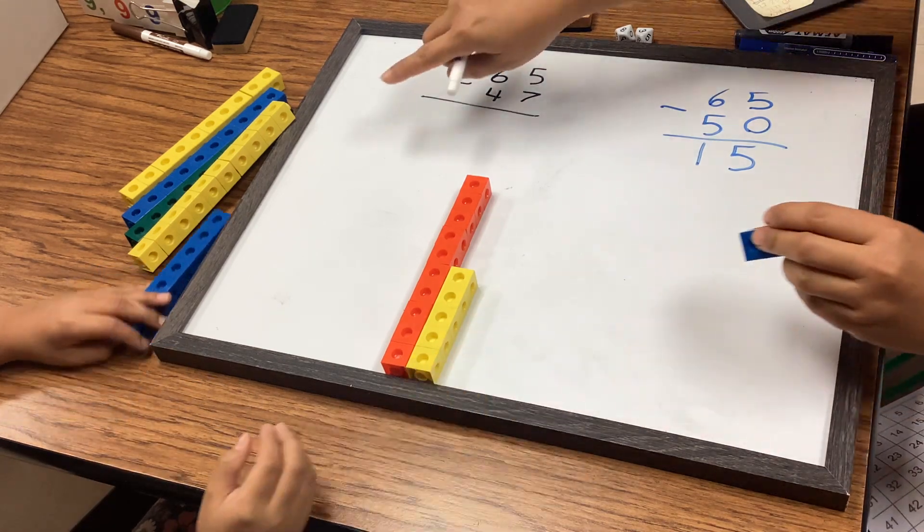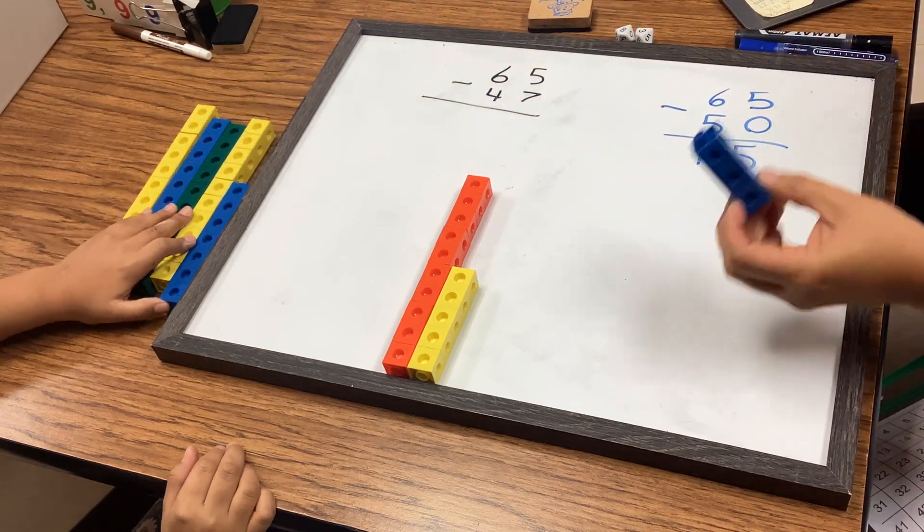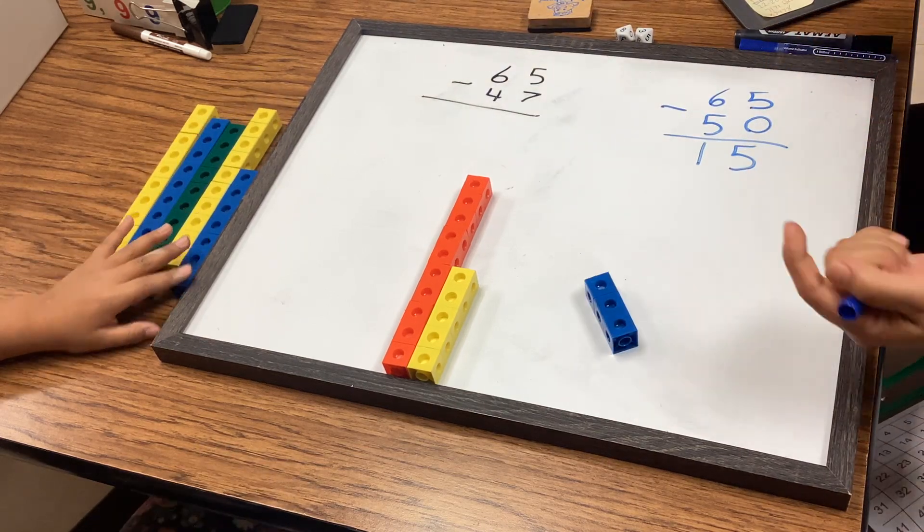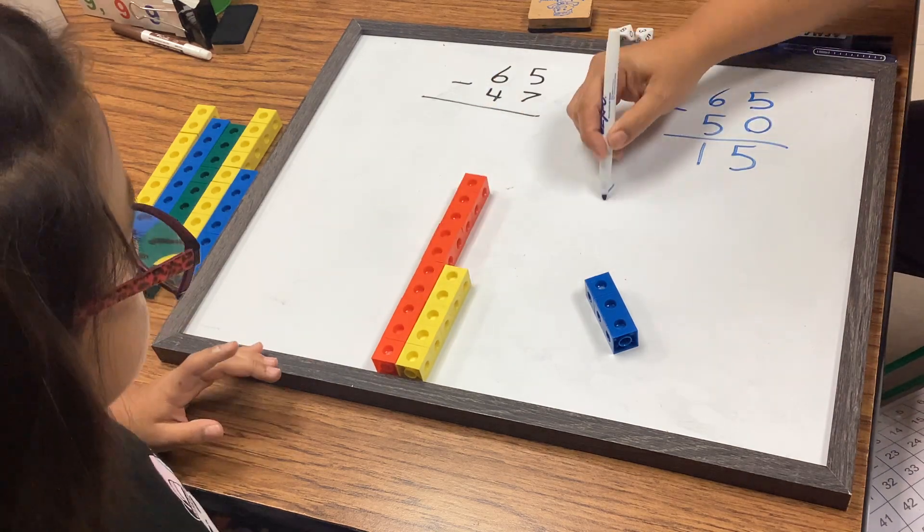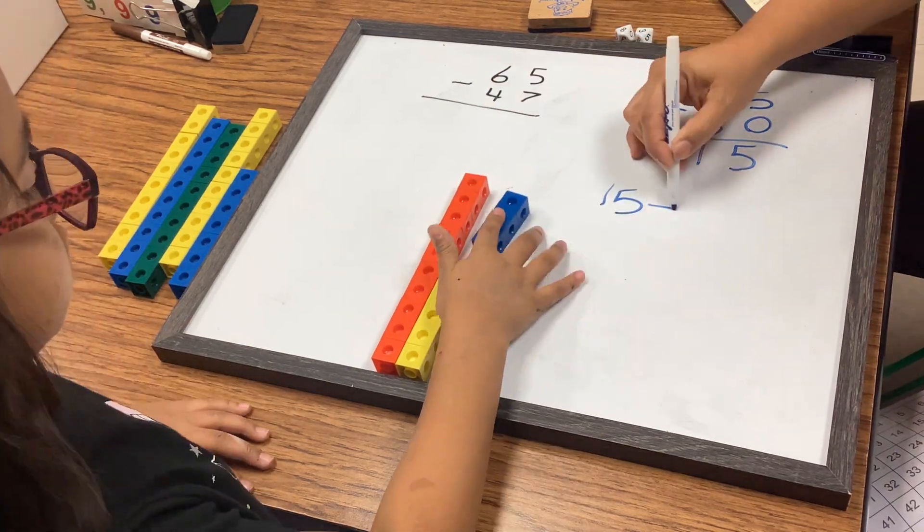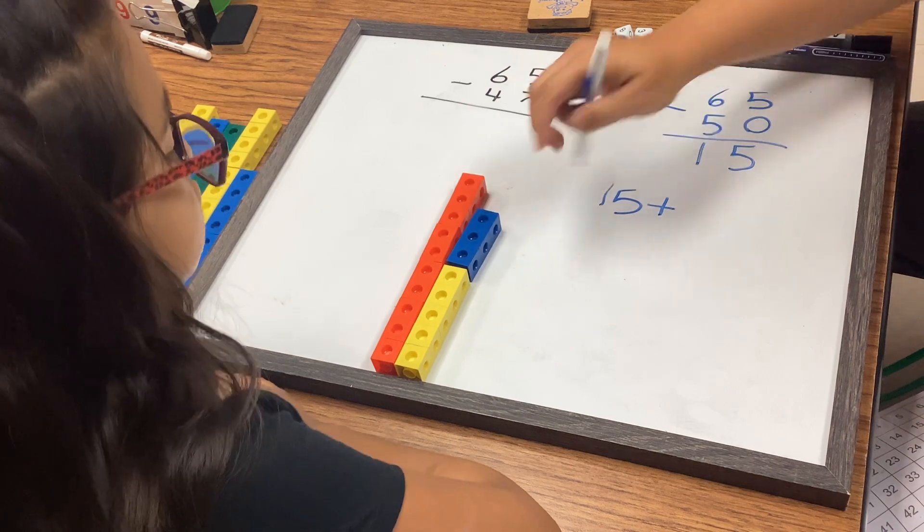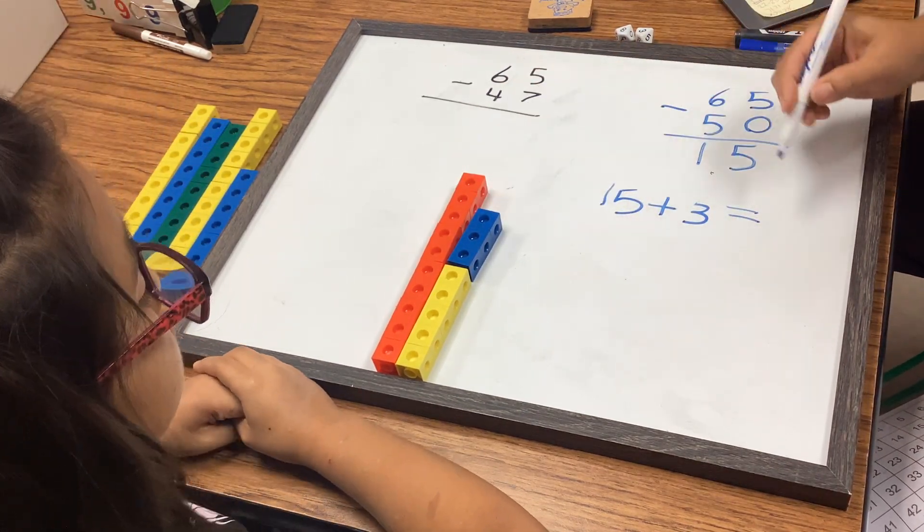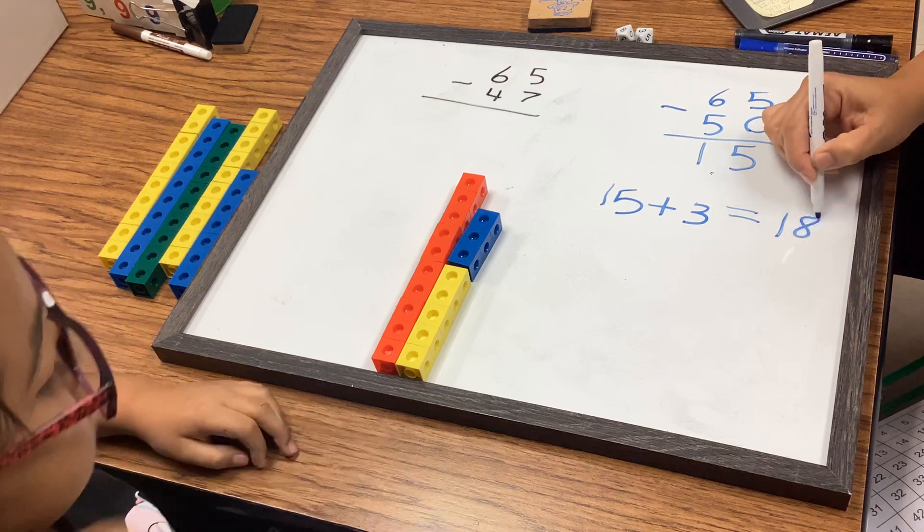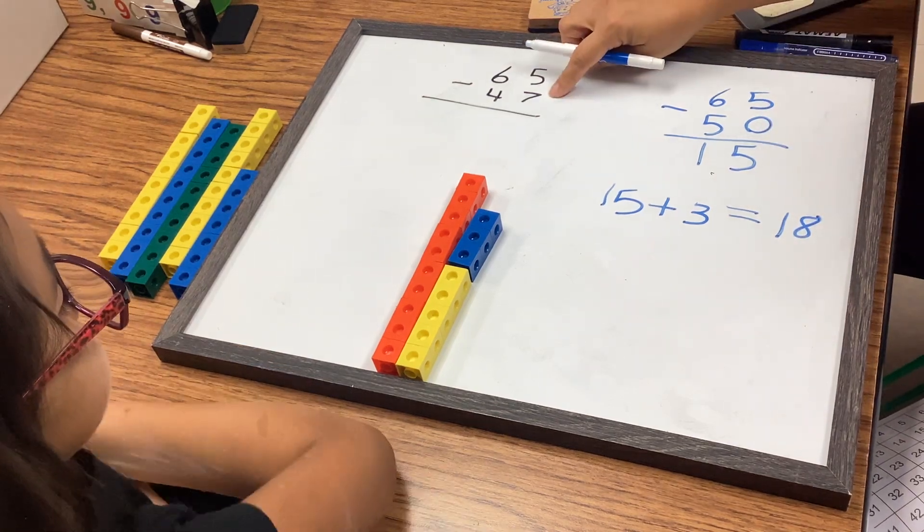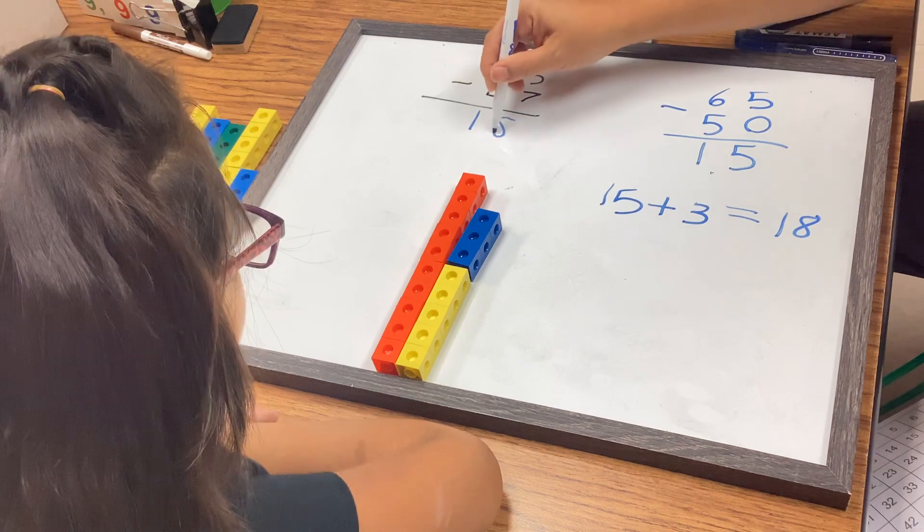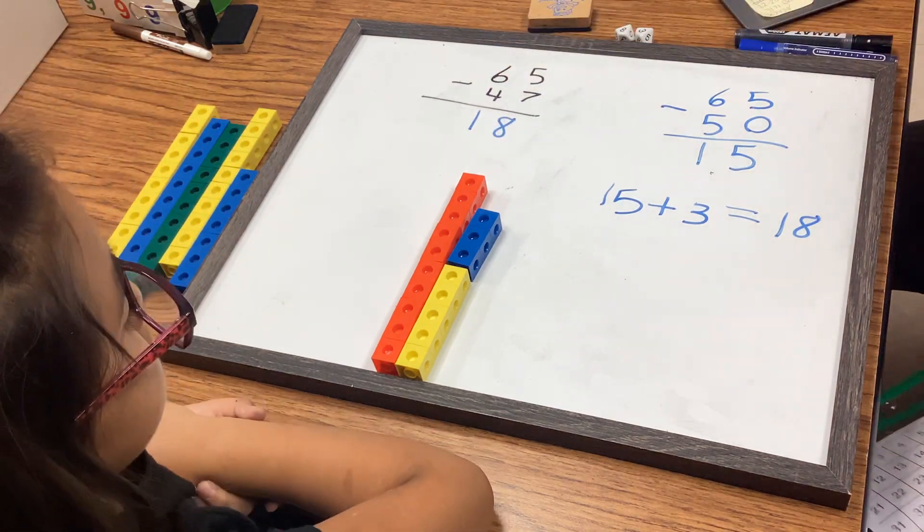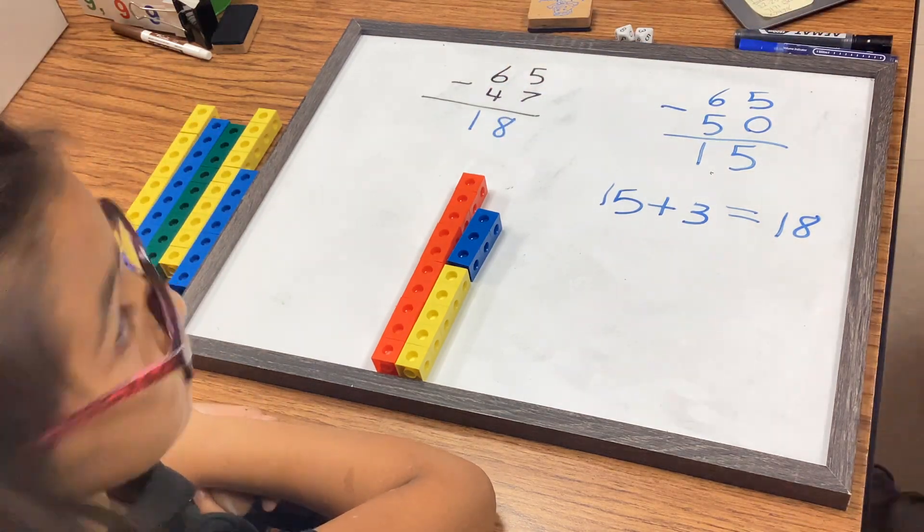You take your 47 and give me back what you are not using. So I have 15 left, plus the three you are not using. How many are left? 18. So 65 minus 47 is 18. That's it.